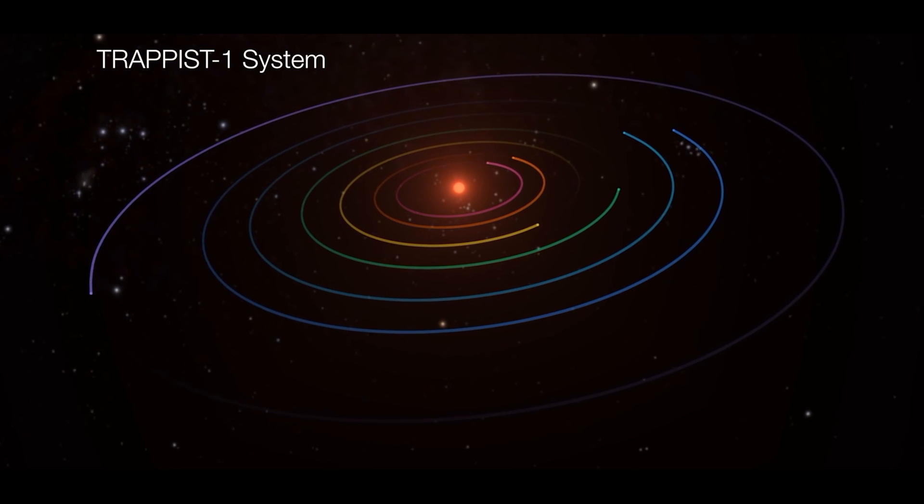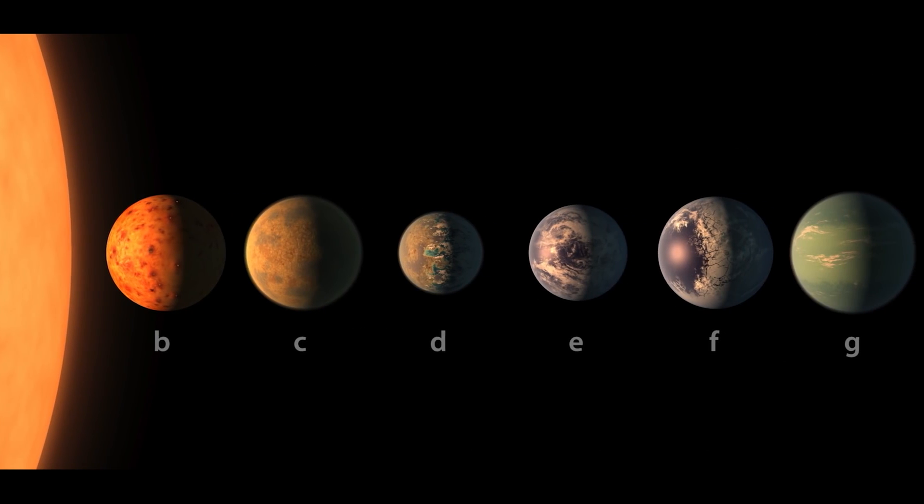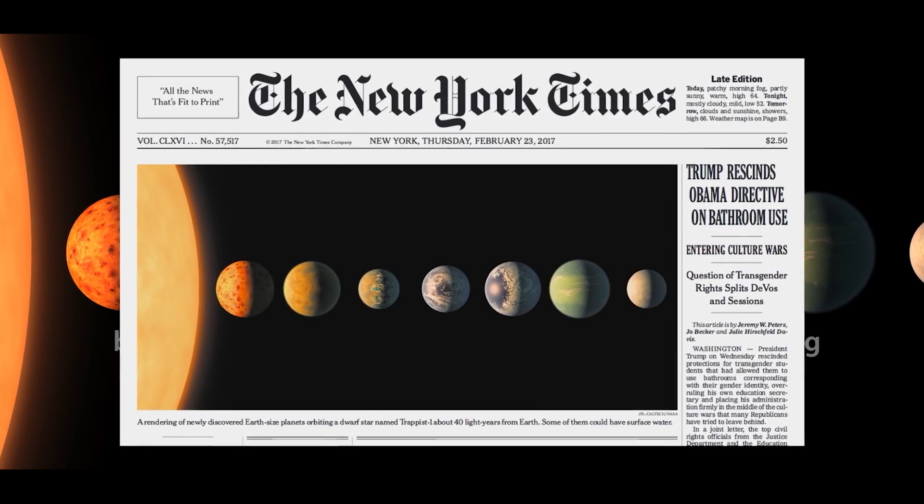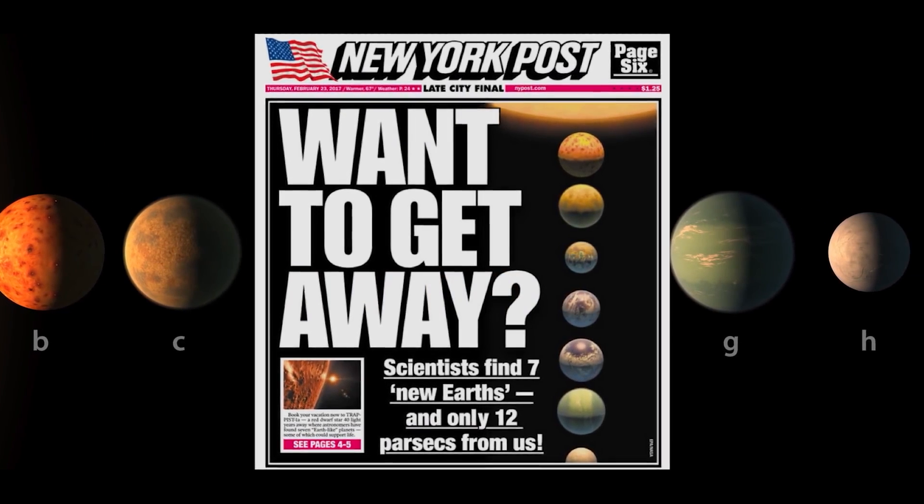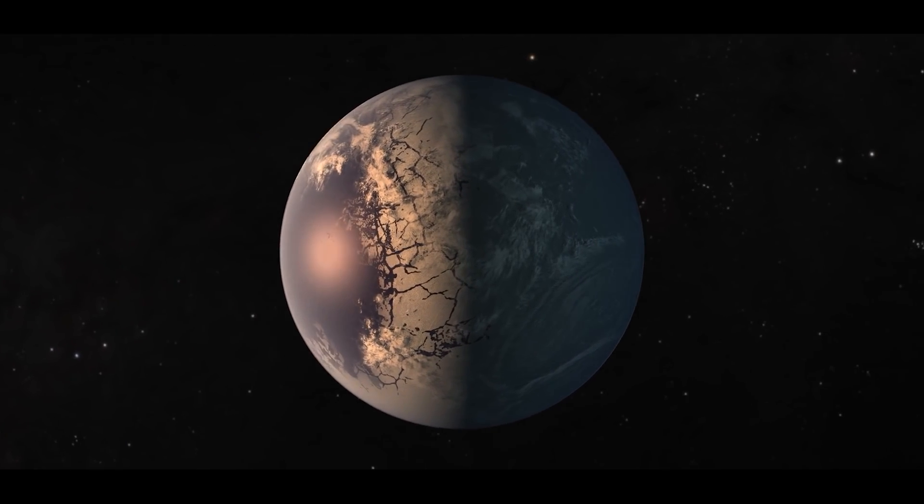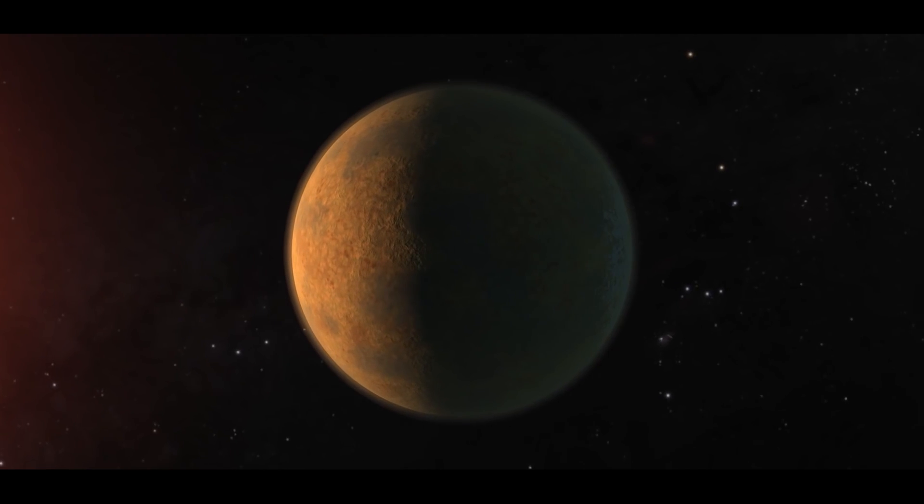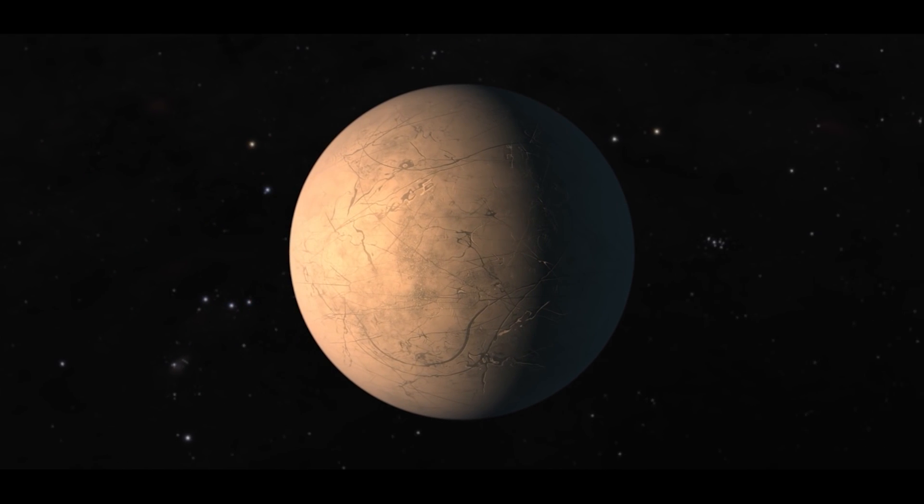TRAPPIST-1 is 40 light-years away from us. In this system, orbiting a low-mass red dwarf are seven terrestrial planets, which are Earth-like planets with a solid surface and often a metallic core. Several of these planets also lie in the habitable zone, that is, in the area far enough from the star for temperatures to permit liquid water, but not so far away as to be a frozen ice planet.